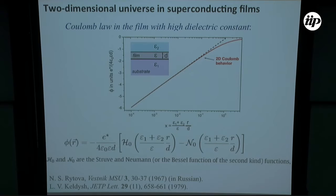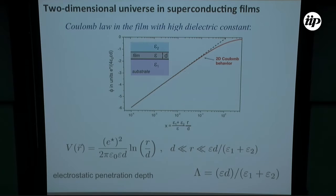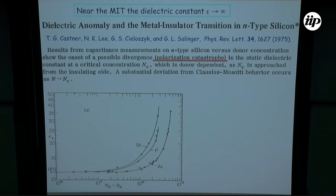What we know is that up to the distances which is called electrostatic penetration depth, really two charges will interact logarithmically. It is all this really very old stuff. This anomaly that near the metal-insulator transition, the dielectric constant goes to infinity. It was pretty nicely settled, many times observed that indeed there is such divergence of dielectric constant, and indeed this phenomenon was named polarization catastrophe.